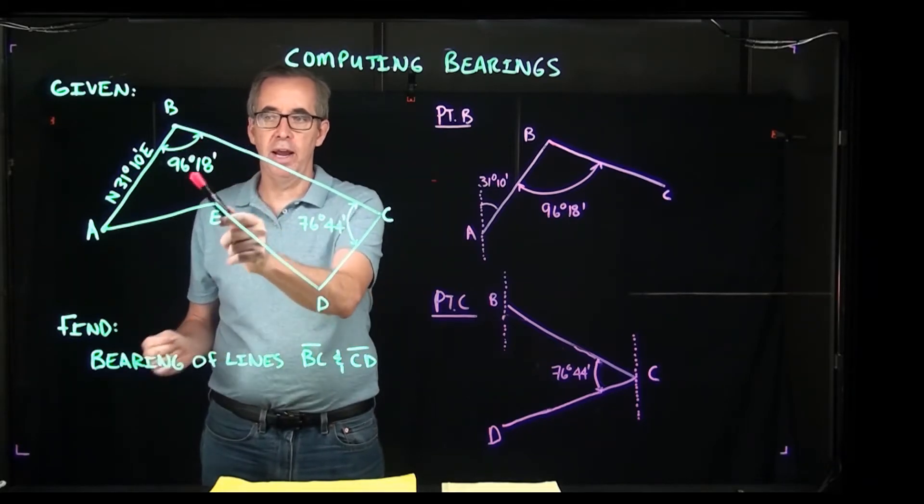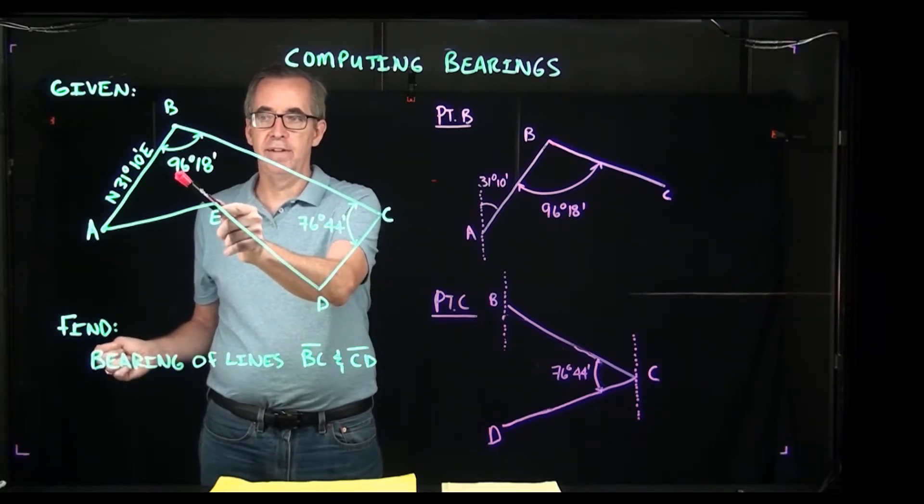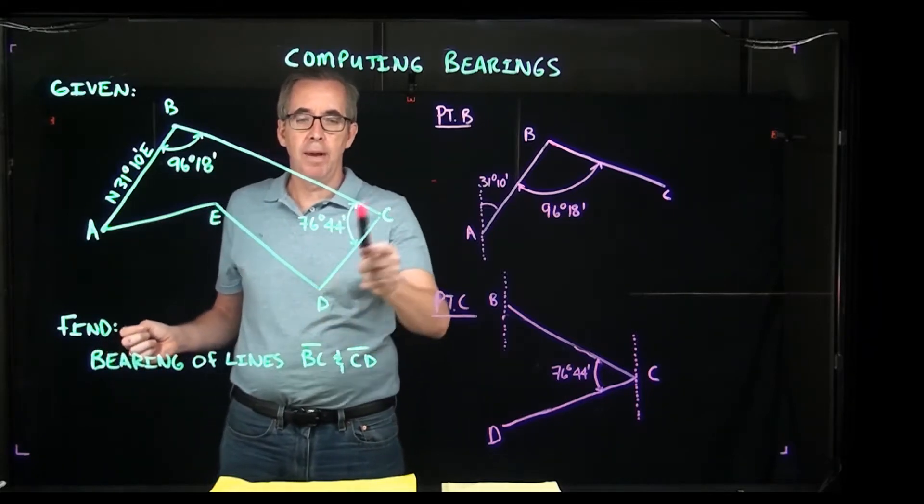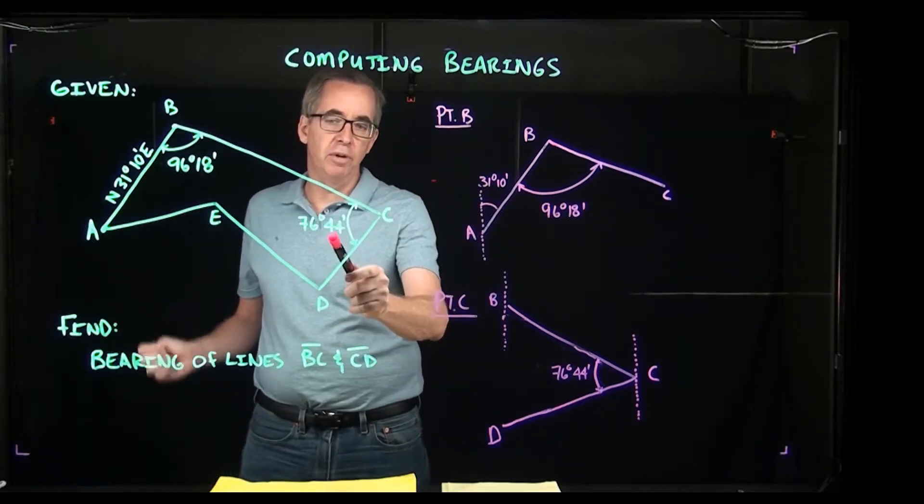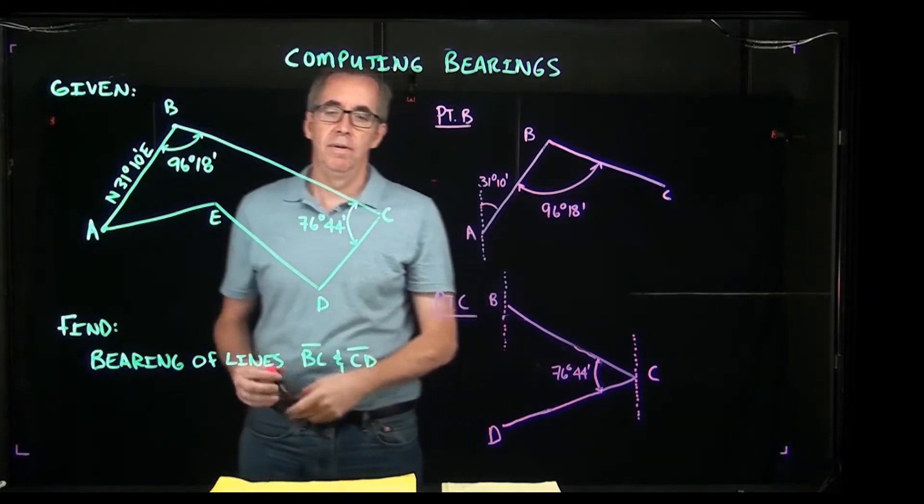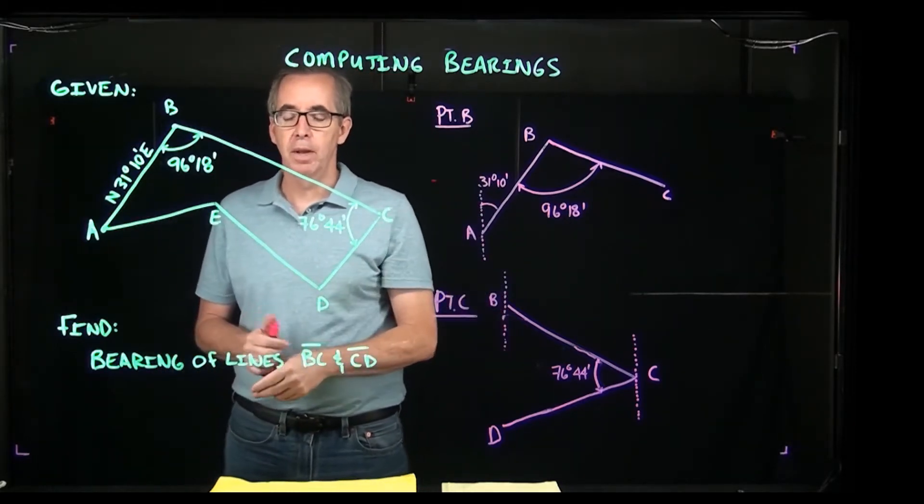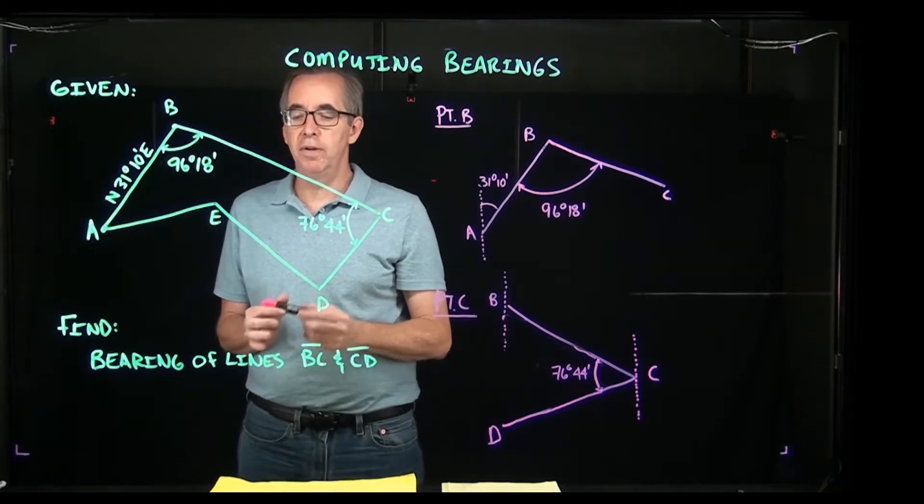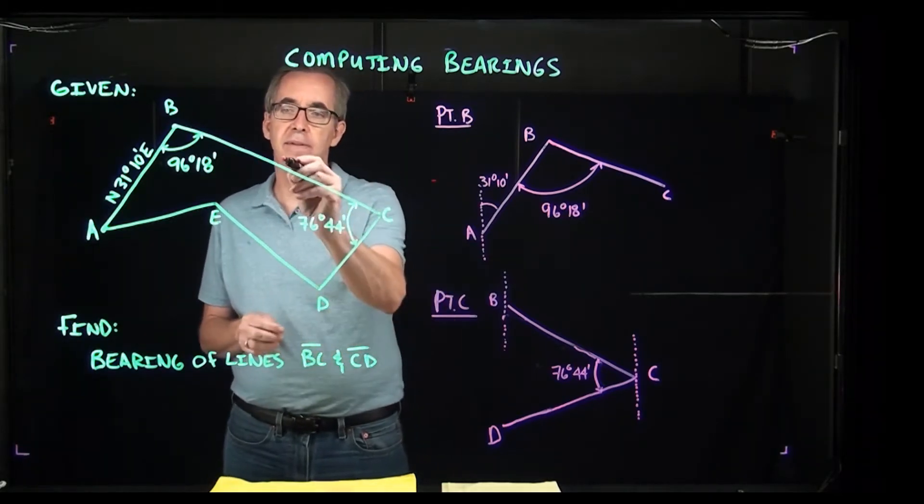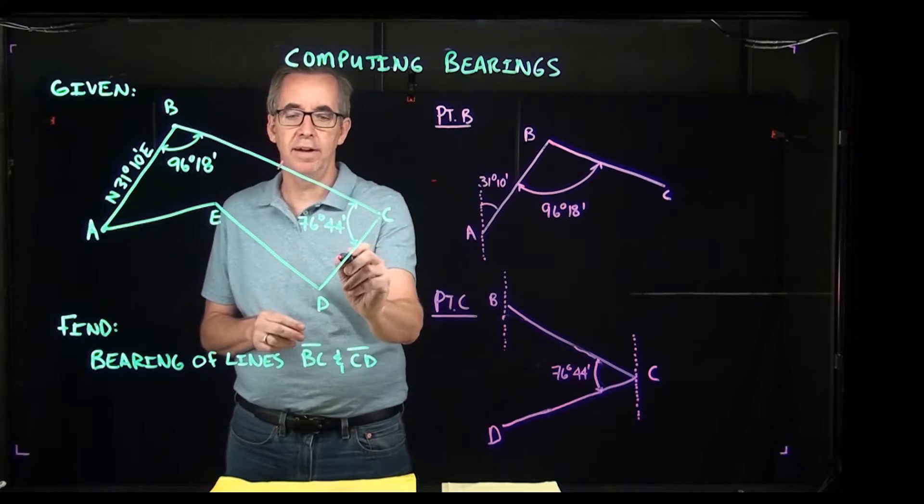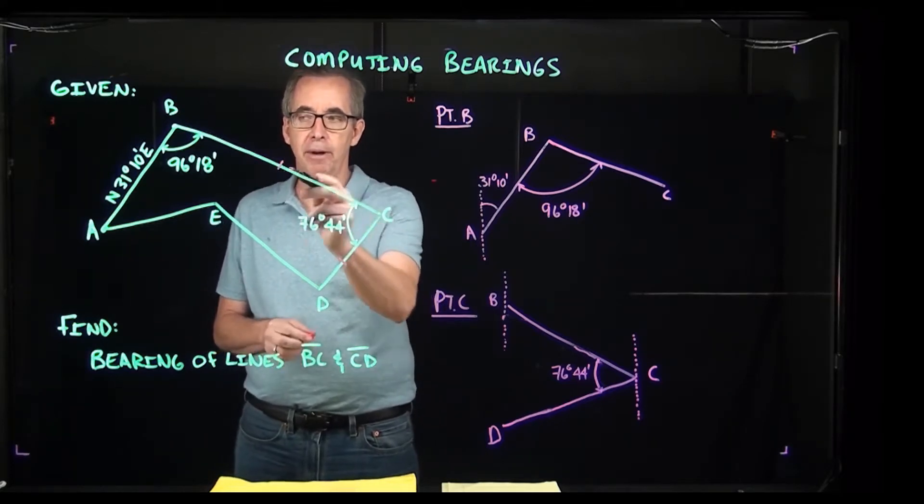At B we have an internal angle of 96 degrees 18 minutes. At point C we have another internal angle of 76 degrees 44 minutes, and then we have two other points here. What we're trying to do is for two sides, BC here and CD, we want to calculate the bearings.